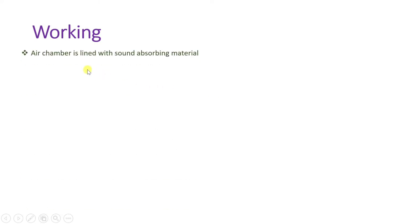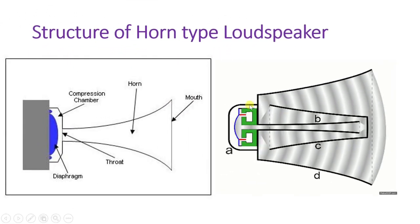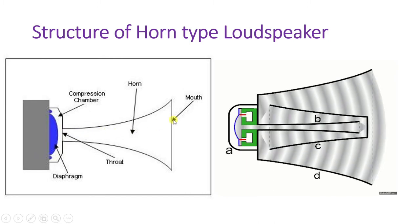Now the working of horn type loudspeaker. The air chamber is lined with sound absorbing material. This is the air chamber where compression of sound happens. The sound is released through the throat with higher pressure, so that intense and directive sound is released through the mouth.